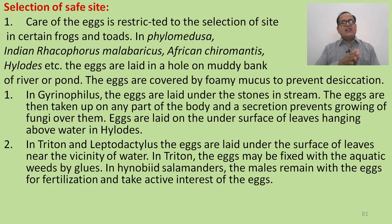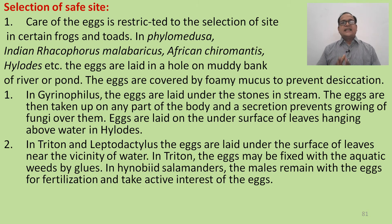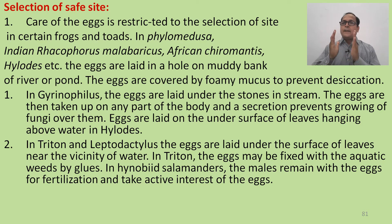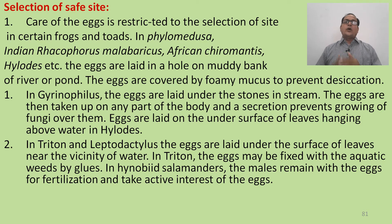The care of eggs is restricted to the selection of site in certain frogs and toads — Phyllomedusa, Indian Rhacophorus naevaricus, African Chiromantis, and hylurids. The eggs are laid in a hole in the muddy bank of a river or pond, and covered with foamy mucus to prevent desiccation. In Granophilus, eggs are laid under stones in streams, and secretions prevent fungi from growing over them.